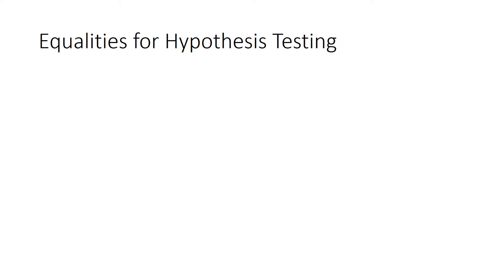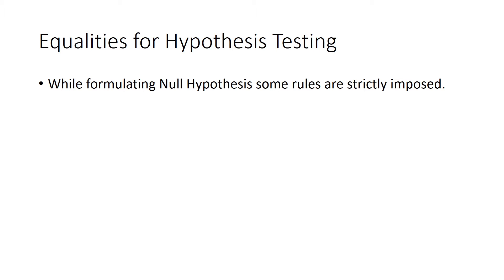So what are basically the equalities? Let us understand with an example. While formulating the null hypothesis, some rules are strictly imposed. There are some rules I haven't covered in the last tutorial — I didn't want to give you too many rules at once. In the beginning, hypothesis testing already has a lot to digest: four steps, many formulas and how they interact. That's why I'm covering equalities now. I covered some basic rules in the last tutorial, but equalities will give you a better intuition.